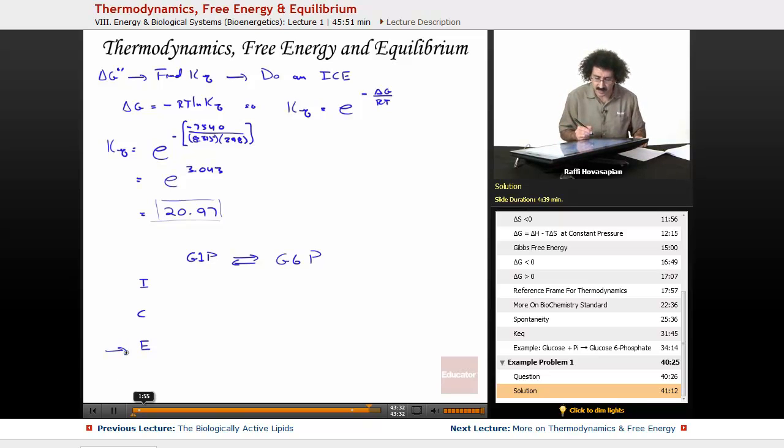They said we started off with 0.15 molar glucose 1-phosphate, and we have none of this. So that's our initial concentration.